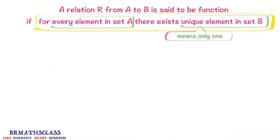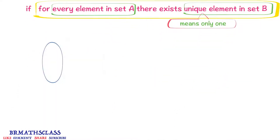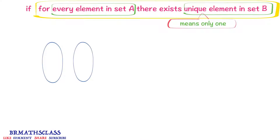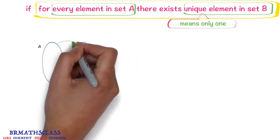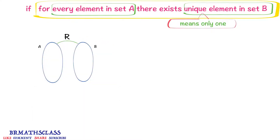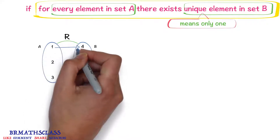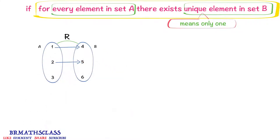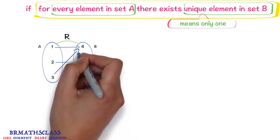I will try to explain the definition of function with the following examples. Consider a relation r from a to b. In this relation, 1 is related to 4, 2 is related to 5, and 3 is related to 4.